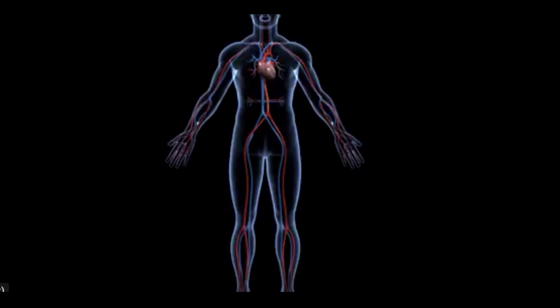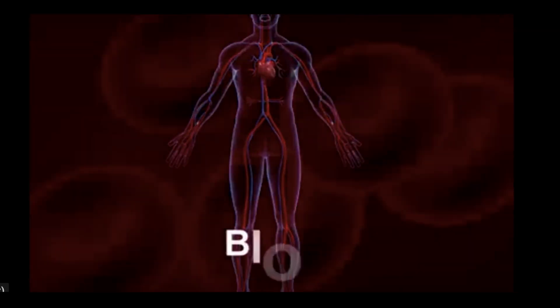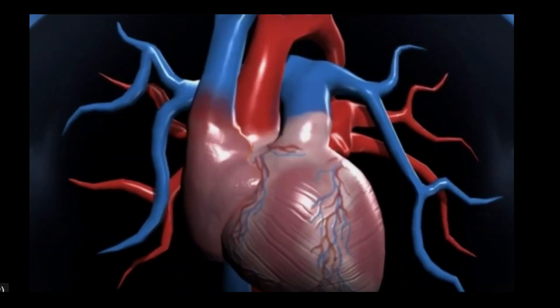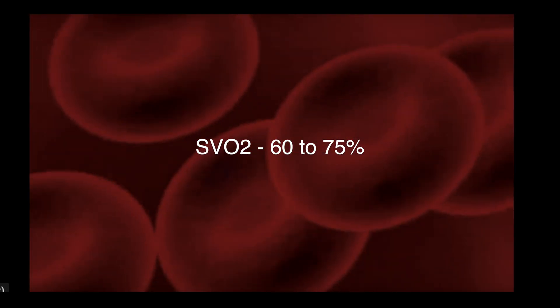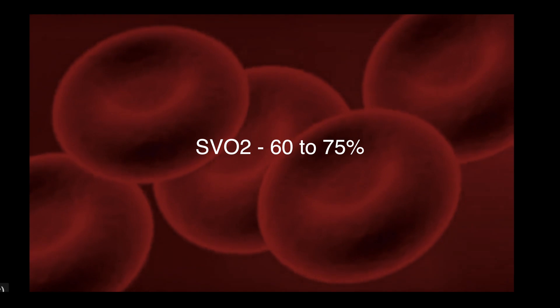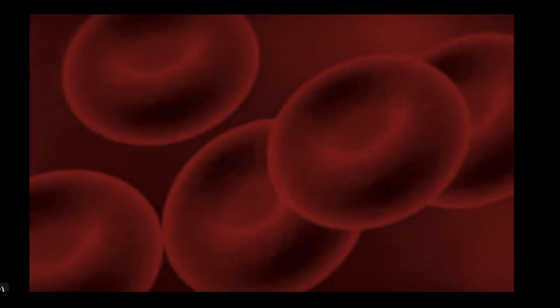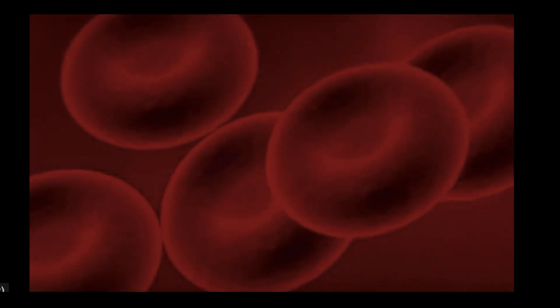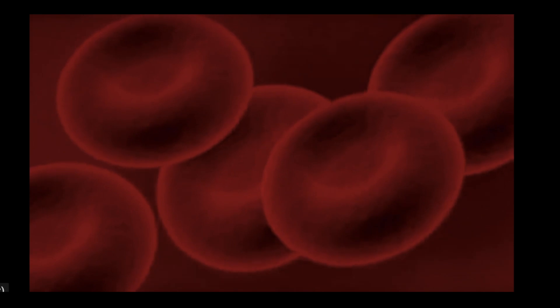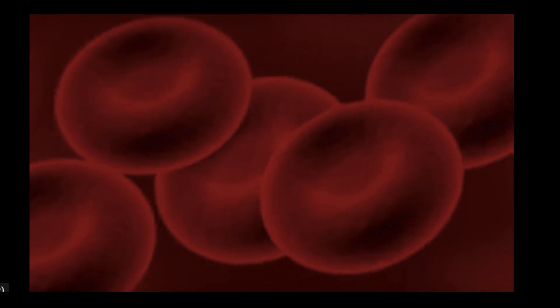On average, the body uses about 25% of the oxygen delivered in the arterial blood during a resting time. Normal mixed venous oxygen saturation ranges are 60 to 75%. Mixed venous oxygen saturation consists of the following factors: cardiac output, arterial oxygen saturation, oxygen consumption, and hemoglobin.